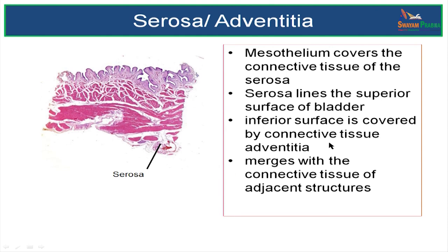In the inferior surface there is no mesothelium, and the connective tissue adventitia will blend with the connective tissue of adjacent structures.